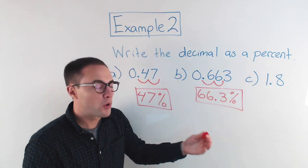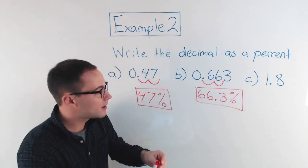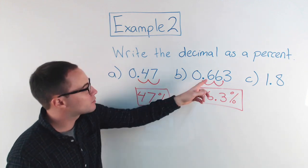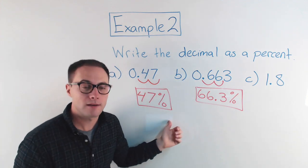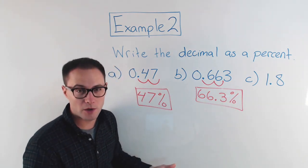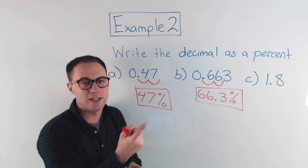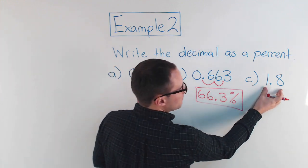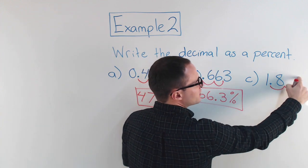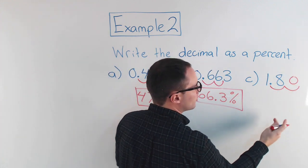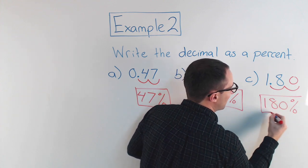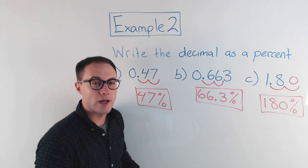For the last one, 1.8 — notice that 1.8 is greater than one, which means the answer is going to be greater than a hundred percent. The previous decimals were all less than one, which is why they were less than a hundred percent. But since one equals a hundred percent, a decimal greater than one gives an answer greater than a hundred percent. So 1.8 — move the decimal once, twice — there's nothing there, so I add a zero as a placeholder, giving us 180 percent. That makes sense because it's greater than a hundred percent.